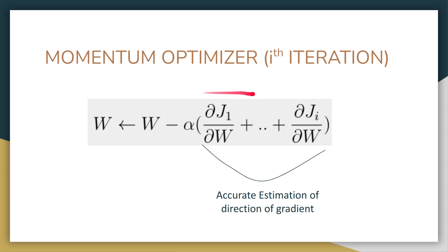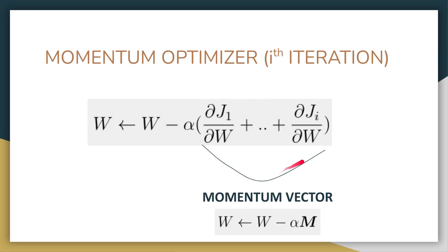This aggregated gradient is a vector, since gradient is a vector. We call this new vector the momentum vector — the sum of gradients is called the momentum vector. We can represent it with the variable m, and weight updates happen using this momentum vector. Note that these are not the exact formulas — I'm giving you the intuition of the momentum optimizer. The accurate formula will be given later in the video.